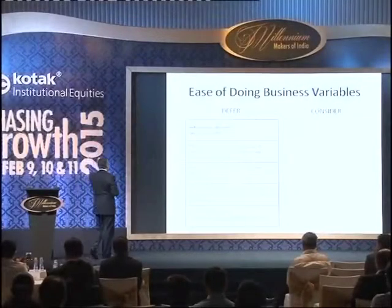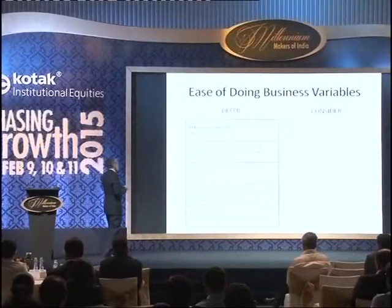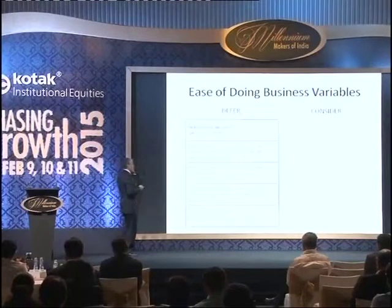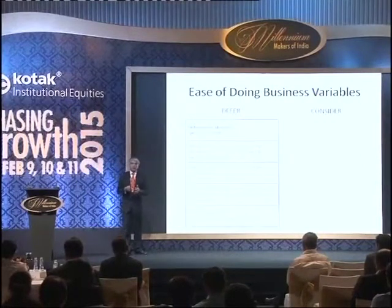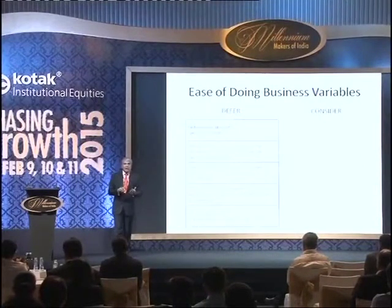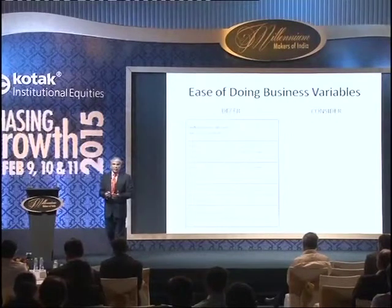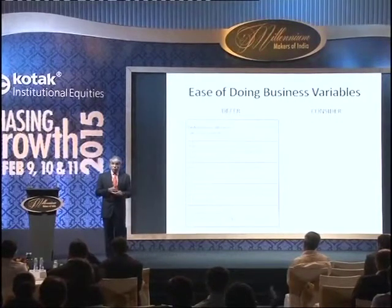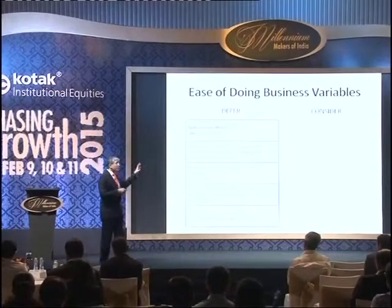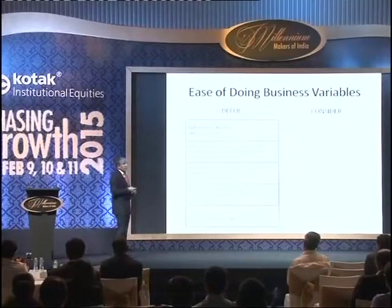Ease of doing business gets a lot of attention and I think it's an important model. Every model in the world is incomplete and not perfect, but it is useful. And I think the ease of doing business variables — there are 24 of them related to labor laws.